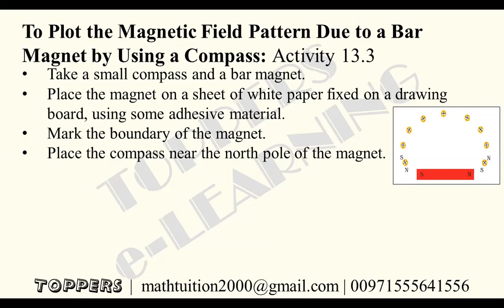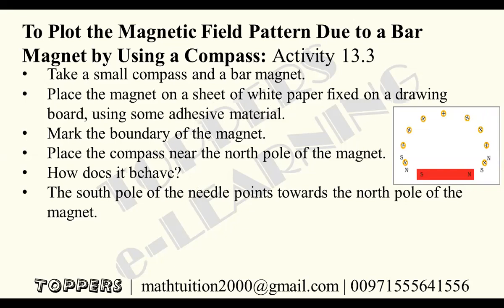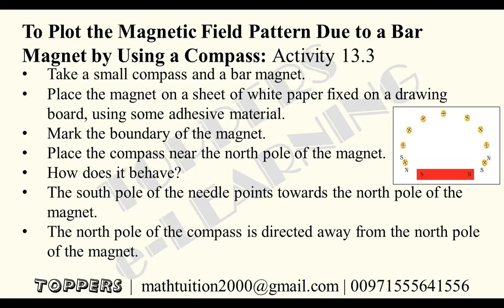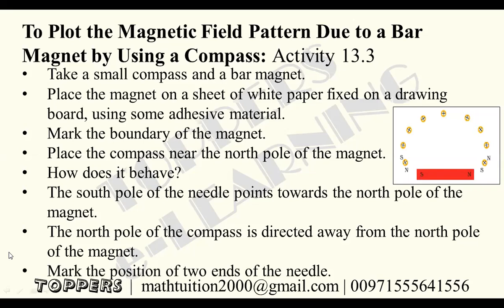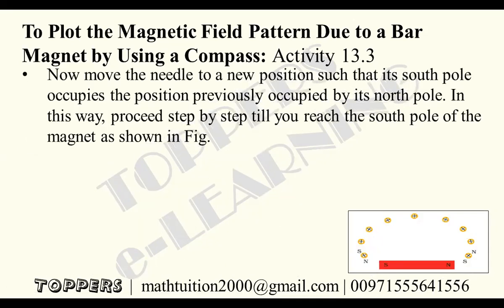Mark the boundary of the magnet. Place the compass near the north pole of the magnet. The south pole of the needle points towards the north pole of the magnet, and the north pole of the compass will be directed away from the north pole of the magnet. Mark the position of the two ends of the needle. Now move the needle to a new position such that its south pole occupies the position previously occupied by its north pole. Proceed step by step till you reach the south pole of the magnet.